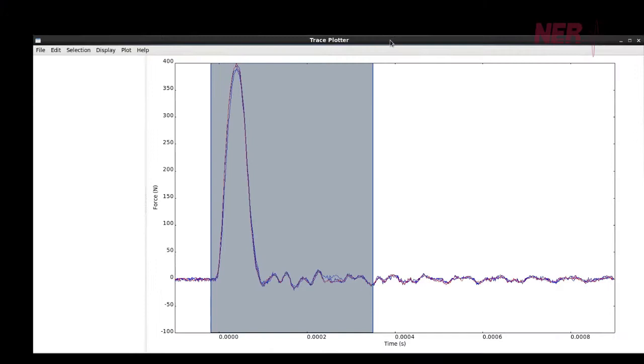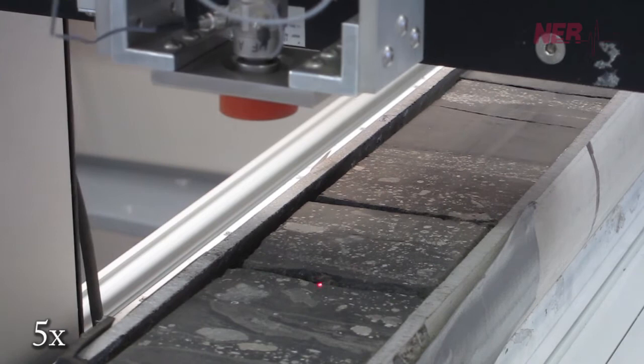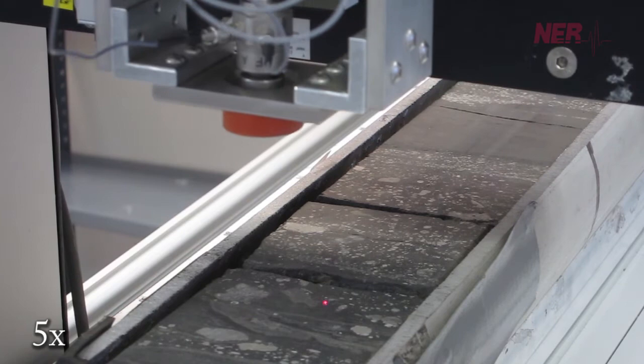When profiling slabbed core, it is common that the core contain fractures, vugs, and other flaws that need to be avoided in the measurement process. Prior to running the impulse hammer on the slab core, laser scanning can be employed to locate these features. Measurements at these locations will be skipped.